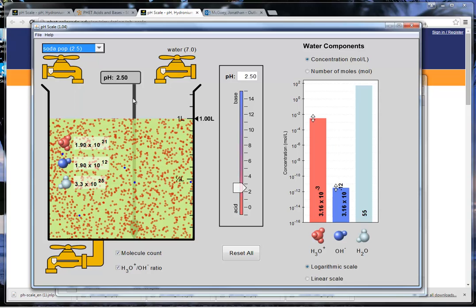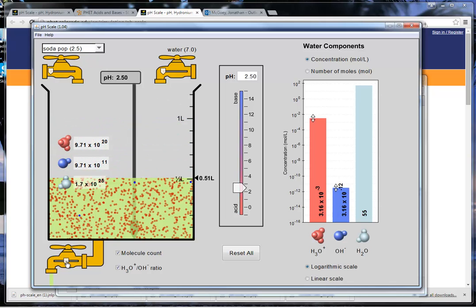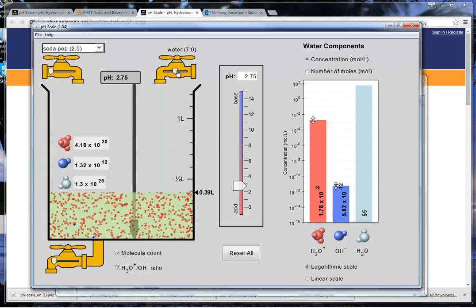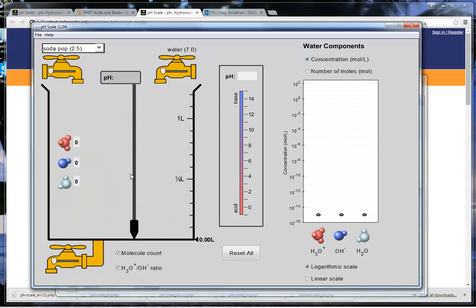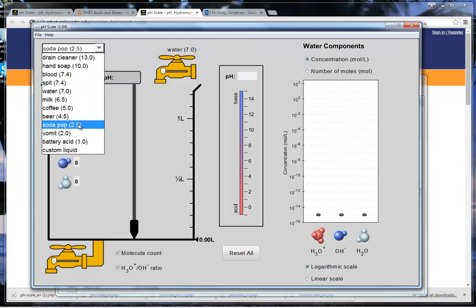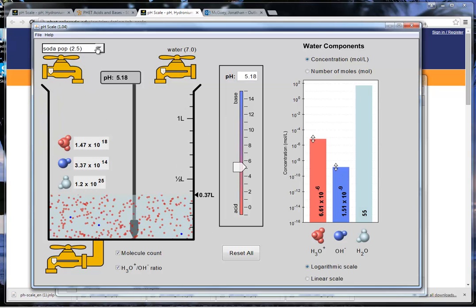So let's toss in some soda pop. It starts out at 2.5. We can take a look at our particle count over here. We can pour out some of the soda, we can fill it up with water, take a look at our new particle count. Ask ourselves if that makes sense. We're always doing that. We're not just fiddling.